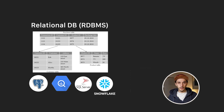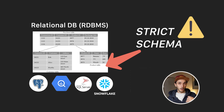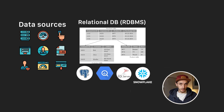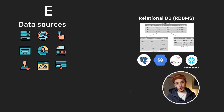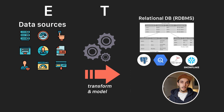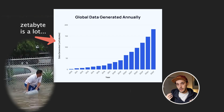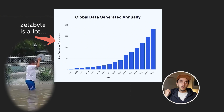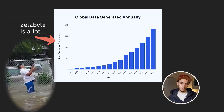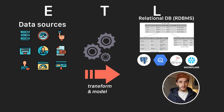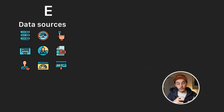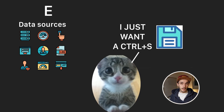Initially, we used relational databases to store the results of our data pipelines. If you extract data from somewhere, you need to transform it and model it in order to store it in a relational database. The problem is that in recent years we've been producing much more data at incredible speed. ETL is a bit rigid in this case and can be time-consuming, because you need to transform and model the data even if you're not sure what you're going to do with it — but you still want to at least capture it.